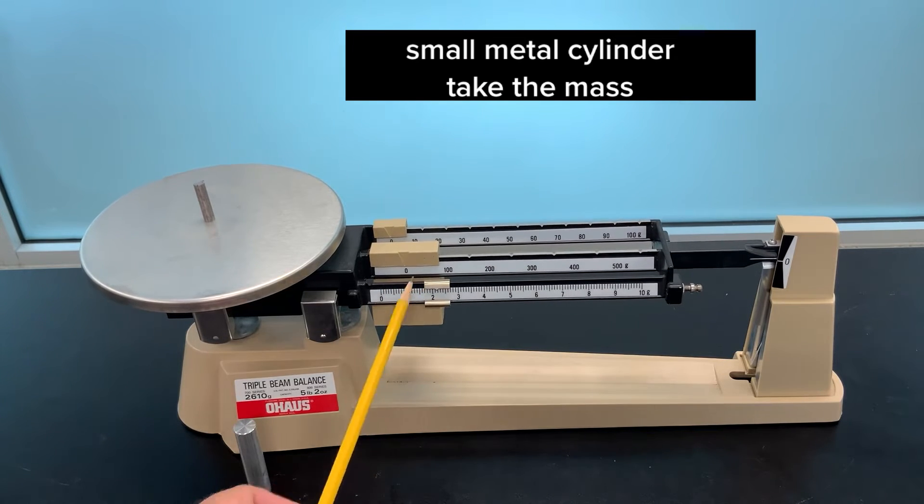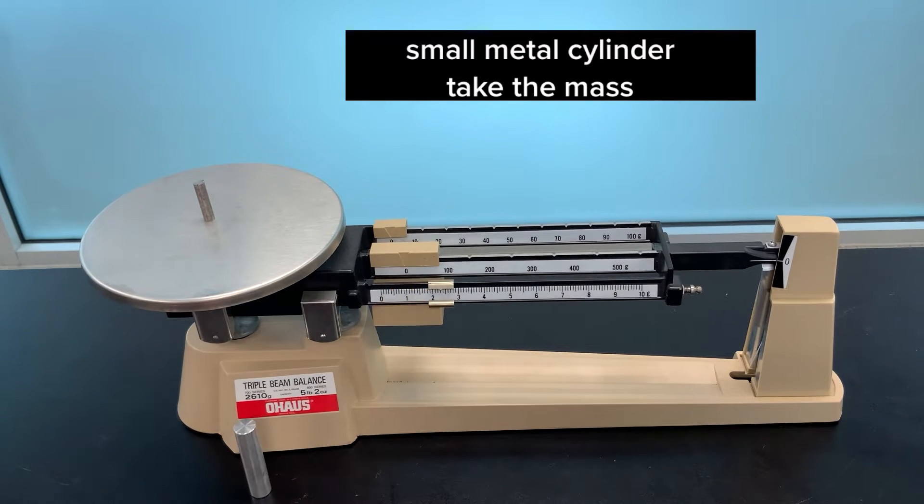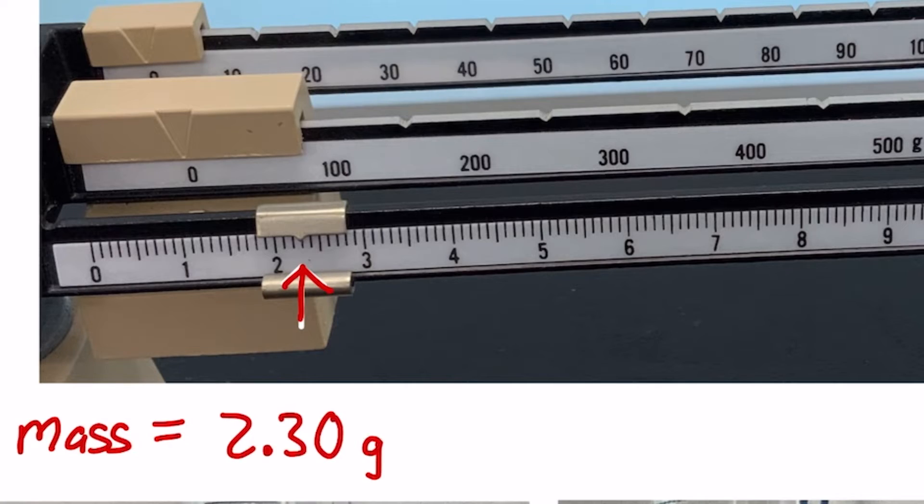The smaller object, again taking the mass, and the mass of the smaller object is 2.30 grams.